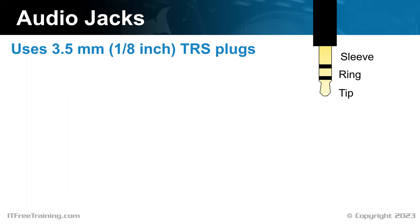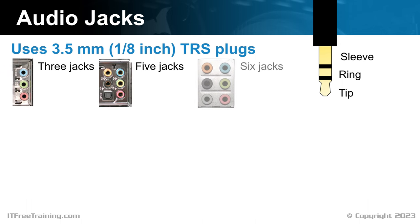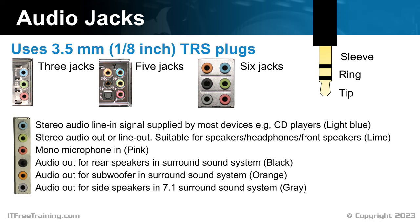Different computers will have a different number of audio jacks. In many cases there may be three, five, or six. To make it simple to know which plugs are which, they are color-coded. Unless you have surround sound, you will most likely only use three of the plugs at the most. The light blue plug is used for input from a device, often called line-in.